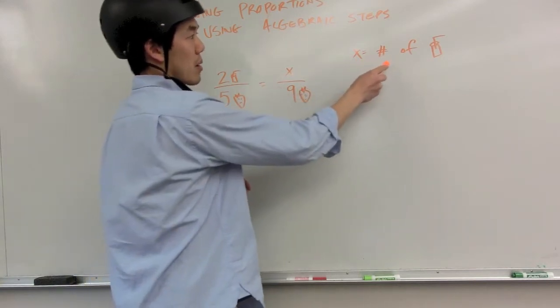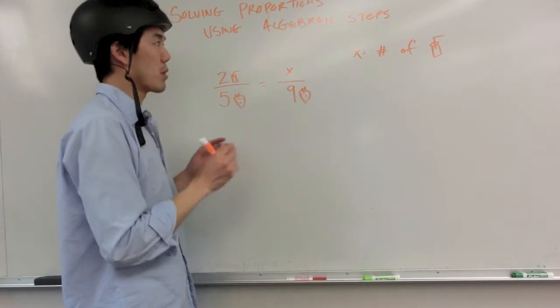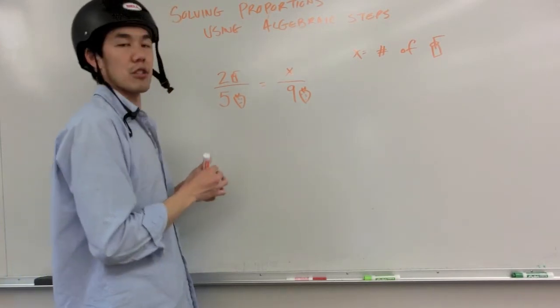And so X is equal to the number of smoothies. And there are many ways for us to solve this proportion, but we want to focus on using algebraic steps.